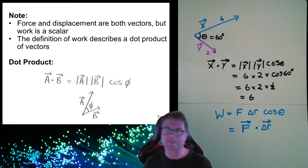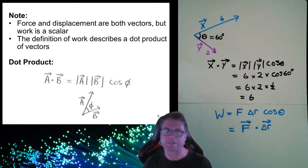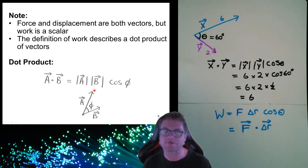To summarize: force and displacement are both vectors, but work is a scalar quantity — it has no direction, just joules. The definition of work describes a dot product of vectors, which in general is the magnitude of the first vector times the magnitude of the second vector times cos of the angle between them.